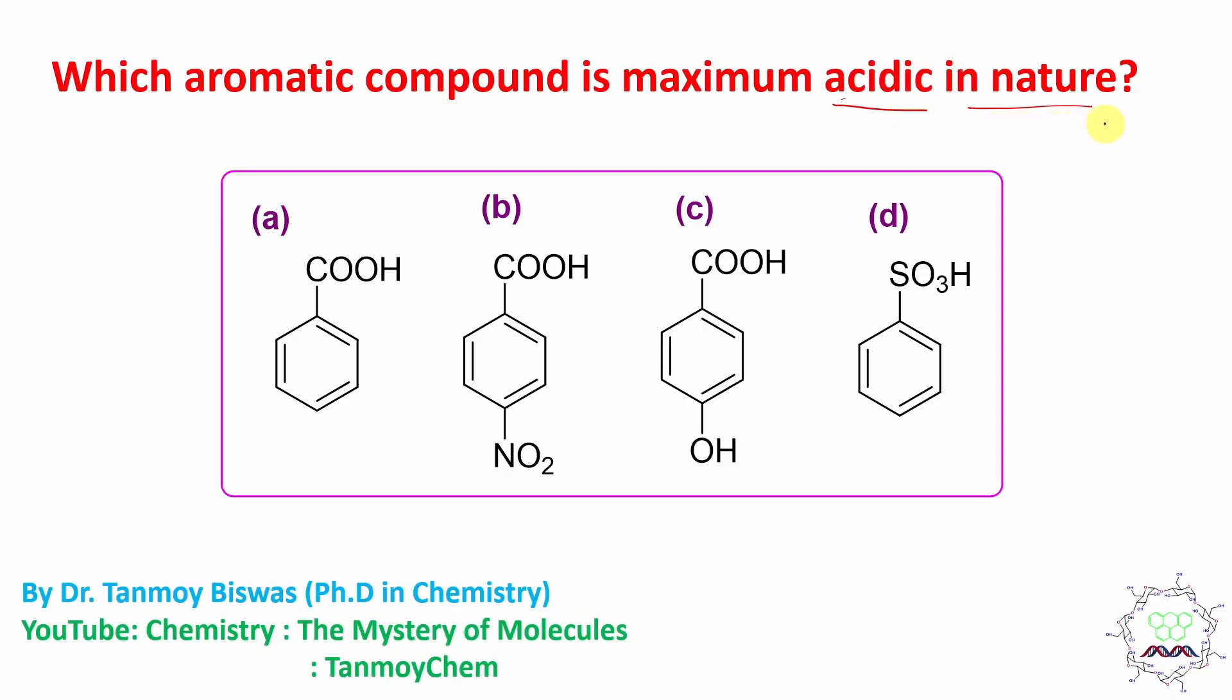Acidic in nature means I am talking about proton releasing capability. Who can release proton maximum efficiently? When such kind of proton releasing tendency is asked, you need to figure out conjugate base or CDB.